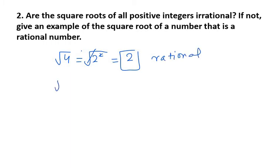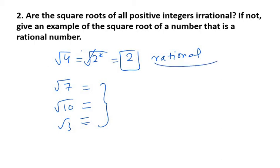If we take 7, √7, √10, √3 — these would all be irrational numbers. So we can't say that the square roots of all positive integers are irrational. There could be cases where they are rational, like √4 = 2 and √16 = 4. So the answer for question 2 is no.